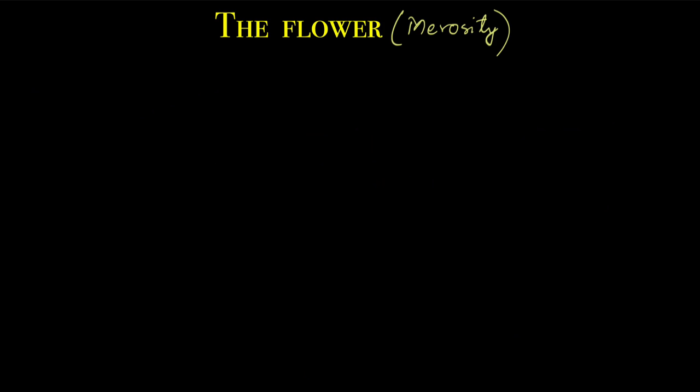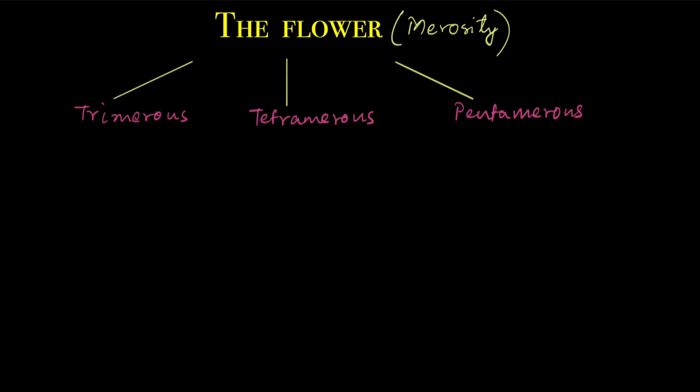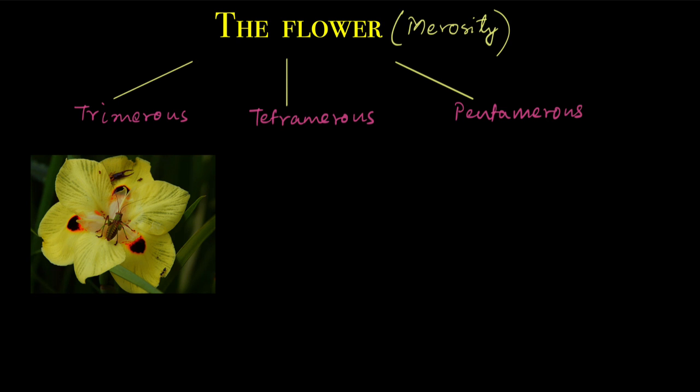Another way of classifying the flower is merosity. What is merosity? It is the number of parts of the flower, like the number of petals, number of sepals, or the number of stamens. Most flowers are either trimerous, tetramerous, or pentamerous. In trimerous flowers, the number of parts of a whorl is three or multiples of three. For example, in this flower you can see there are six petals — six is a multiple of three — so this is a trimerous flower.